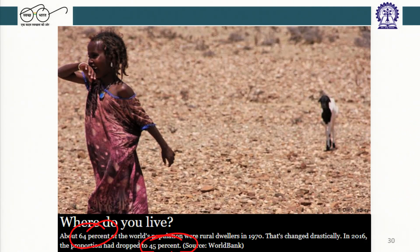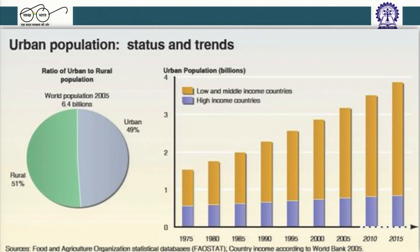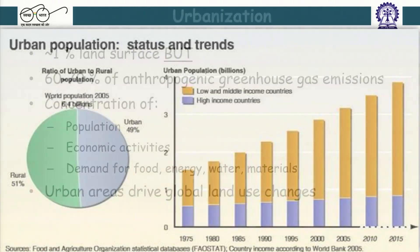In 2016, only 45 percent of people were living in rural areas, so we are becoming city people. More than 50 percent of the world's population now lives in cities. The number of us living in urban areas rose from 1.34 billion in 1970 to 4 billion in 2016. According to a World Bank report, the majority of people are now living in urban areas even in less developed countries. The rate of urbanization is happening more in low and middle income countries compared to high income countries.